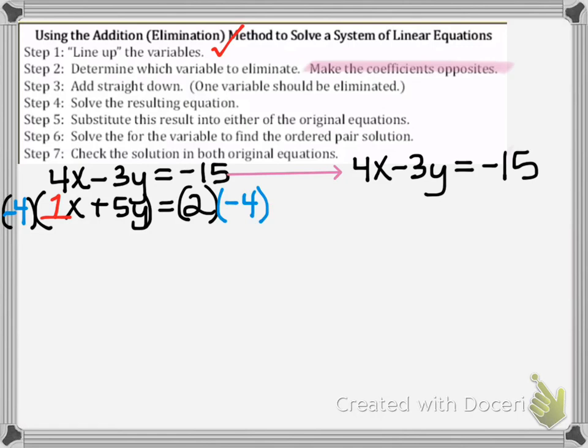But now our second equation, we're going to distribute negative 4 to everything on both sides of the equation. So when I distribute on the left side, I get negative 4x minus 20y. That's where the negative 20y comes from because you're multiplying negative 4 times positive 5y. And then on the right side, after I distribute, I get negative 8.